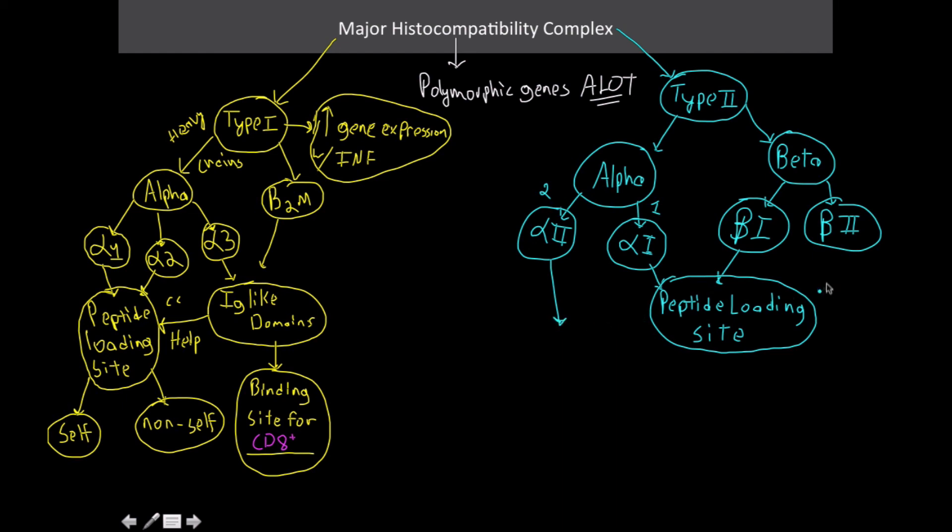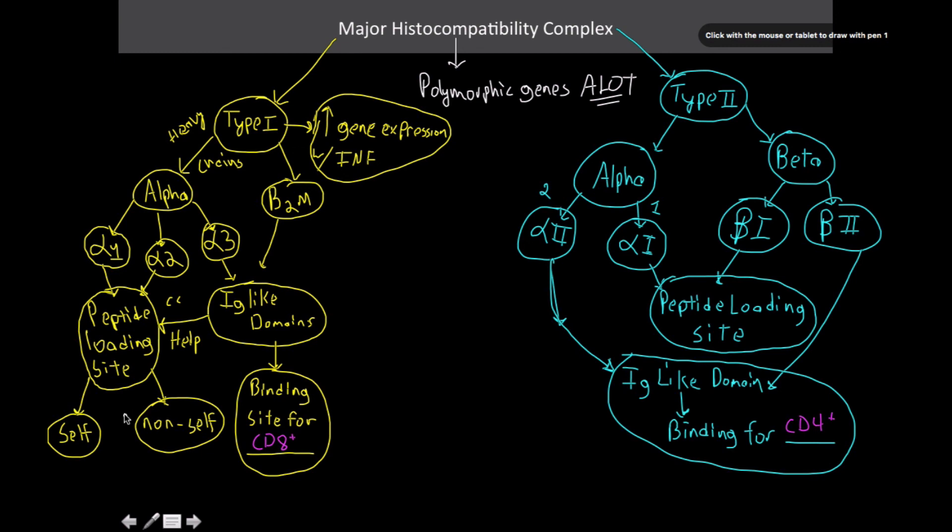Whereas for the 2, for both the beta 2 and the alpha 2, these guys come together to make up the immunoglobulin-like domain. The immunoglobulin-like domain is going to be the binding site for CD4 cells, or CD4 co-receptor. All right, so that's the binding site for the CD4 co-receptors. I'm going to put this giant P here and then a giant P here.